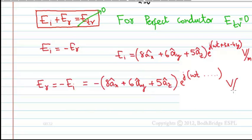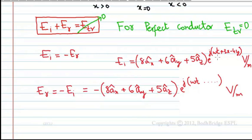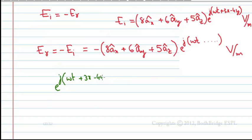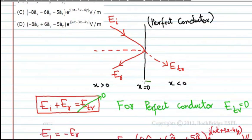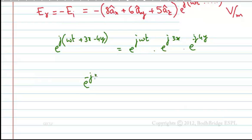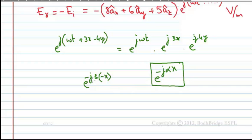Now, the incident wave has the phase term e^(jωt + 3x − 4y). The standard wave propagation form is e^(−jαx). Here, the incident wave was travelling in the −x direction, giving e^(j·3x) which equals e^(−j·3·(−x)). So originally α acted on −x.